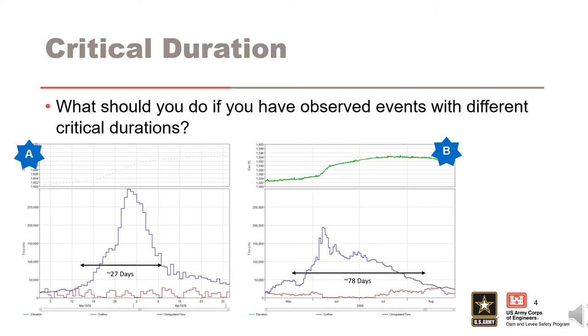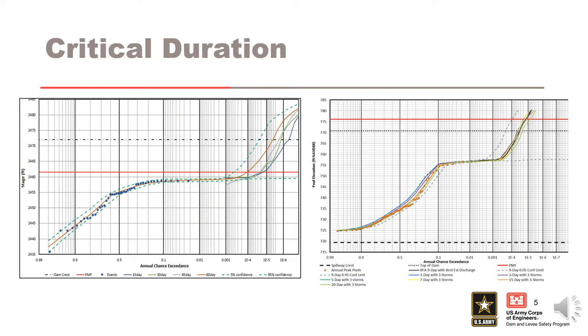What if we have multiple driving event types for a project? Look at this example to see if you can identify which critical duration would most likely correspond to the driving mechanism of extreme floods for this watershed. Is it a rainfall event with a critical duration on the order of a week? Or is it a rain-on-snow-melt event with a critical duration on the order of a month?